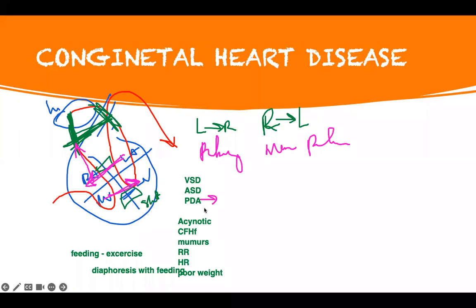PDA specifically has a loud machinery murmur. ASD has a split S2. These are the murmur sounds associated with each. VSD and ASD patients are acyanotic, so you have time to take care of the problem and fix it later. You don't need to fix it right away. Key features of left-to-right shunts: acyanotic, poor weight gain, diaphoresis with feeding.